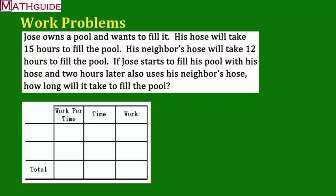In order for us to solve this problem, we're going to use the table that I have down here. I'm going to code it like this. I'm going to put a J here for Jose, and I'm going to put an N, and this will represent his neighbor's hose.